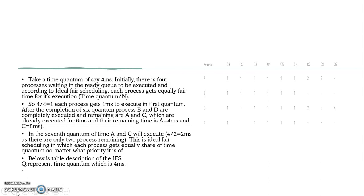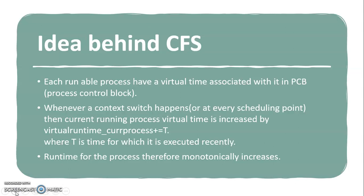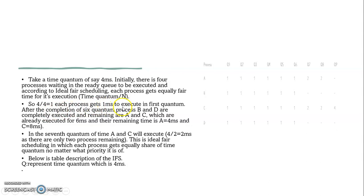Taking a time quantum of 4ms, initially there are four processes waiting in the ready queue. According to ideal fair scheduling, each process gets an equally fair share of time, so 4/4 = 1 — each process gets 1ms to execute in the first quantum. After the completion of 6 quanta, processes B and D are completely executed. The remaining processes are A and C, already executed for 6ms, with remaining times of A = 4ms and C = 8ms. In the 7th quantum, A and C each execute for 4/2 = 2ms since only two processes remain. This is ideal fair scheduling, where each process gets an equal share of the time quantum regardless of priority.